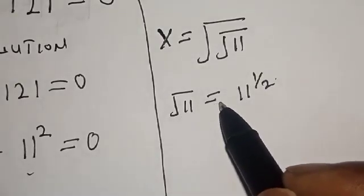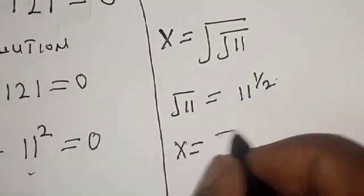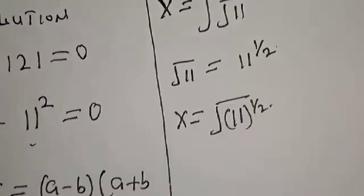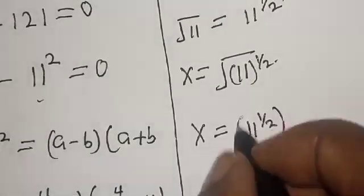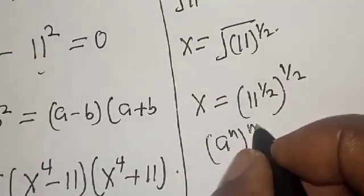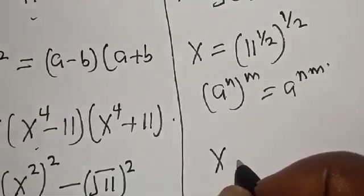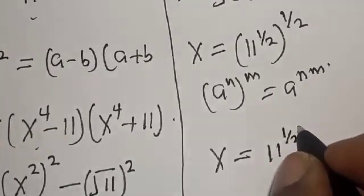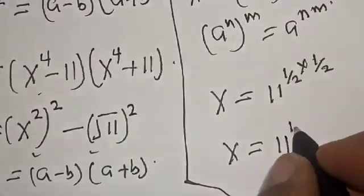Note that the square root of 11 is equal to 11 raised to the power 1 over 2. So x equals 11 raised to the power 1 over 2, all raised to the power 1 over 2. Remember that a raised to the power n, raised to the power m, equals a raised to the power n times m. Therefore x equals 11 raised to the power 1 over 2 times 1 over 2, which gives x equals 11 raised to the power 1 over 4.